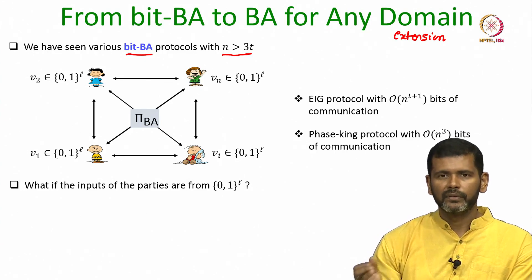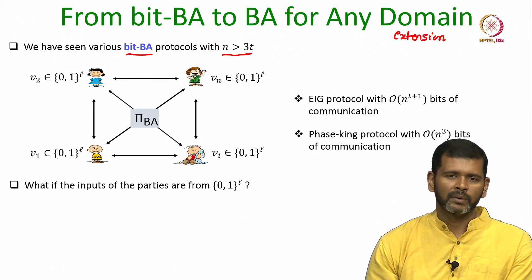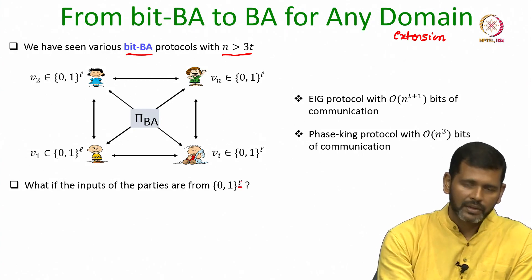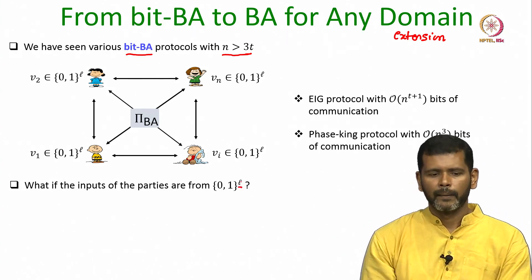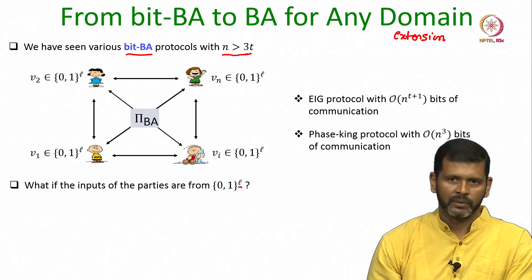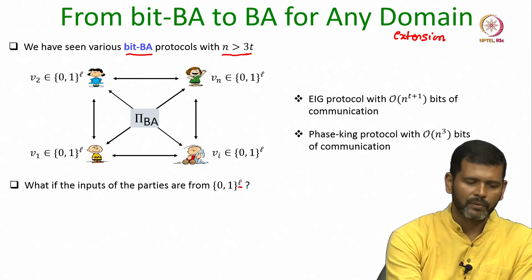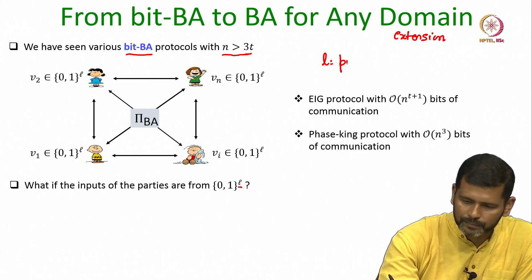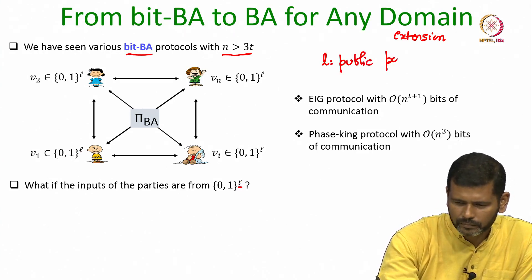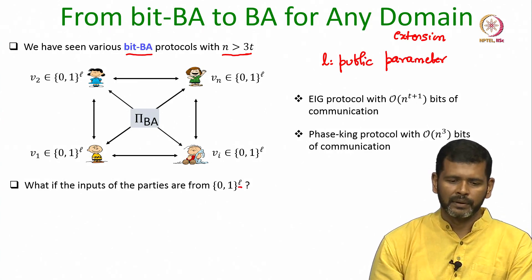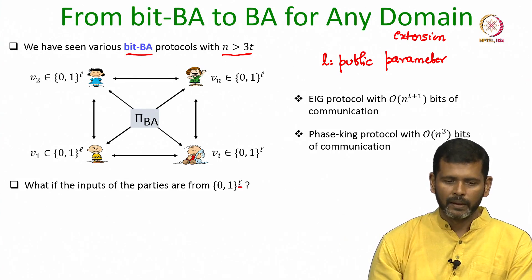But what if in some application the inputs of the parties is not a single bit, but rather each party has a large input — say an input of size 1000 bits or an input of size 1 GB. In general, what if the inputs are of size L bits, where L is some public parameter? You might be wondering where exactly we encounter such applications.